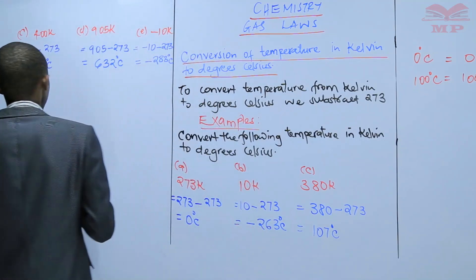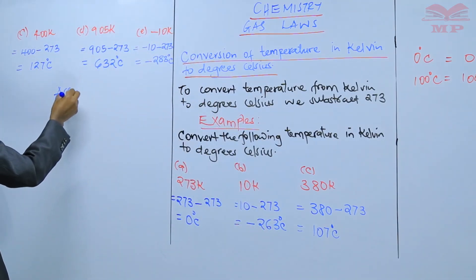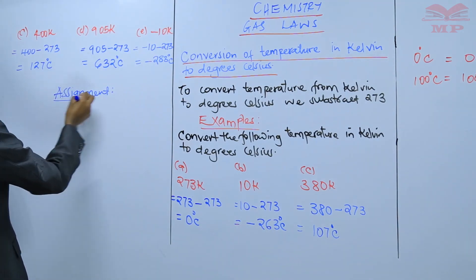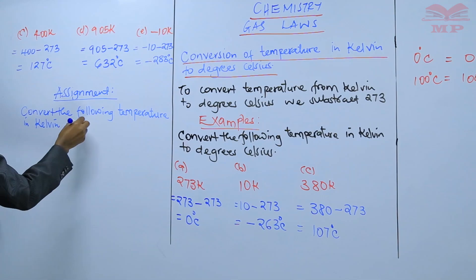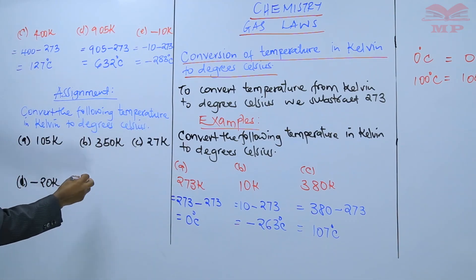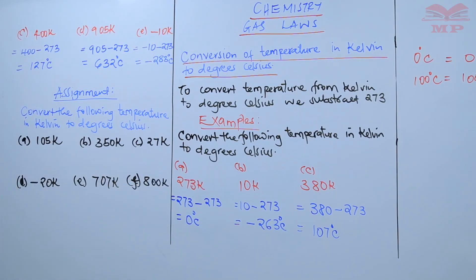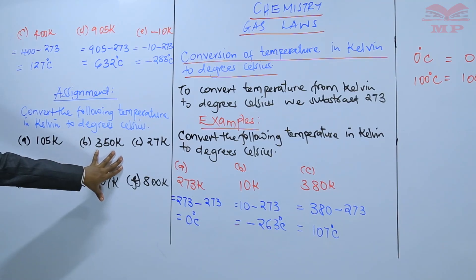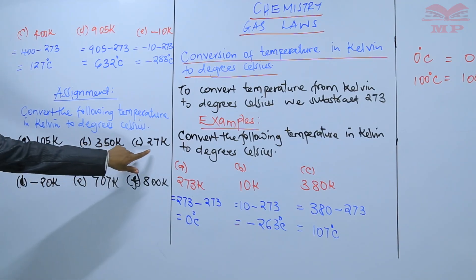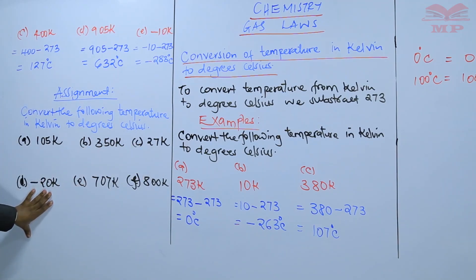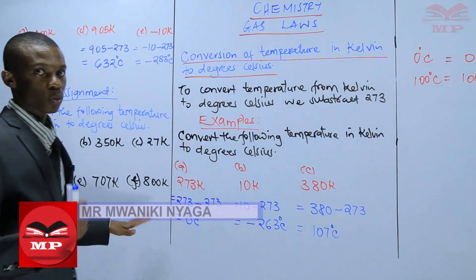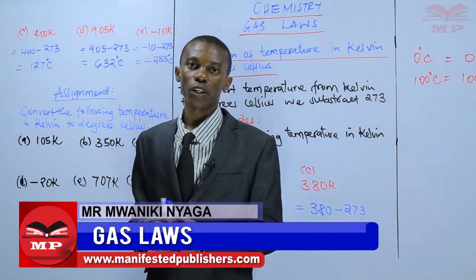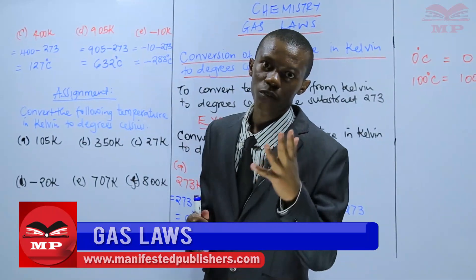Before I leave you, I will leave you with an assignment. Convert the following temperatures from Kelvin to degrees Celsius: 105 Kelvin, 350 Kelvin, 227 Kelvin, negative 20 Kelvin, 707 Kelvin, and 800 Kelvin. Ensure you've done those conversions before we meet in the next lesson. Thank you for being part of this lesson.